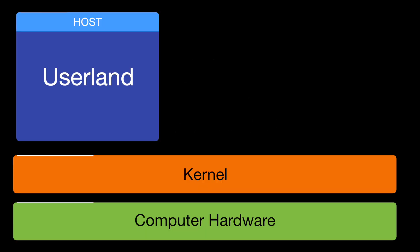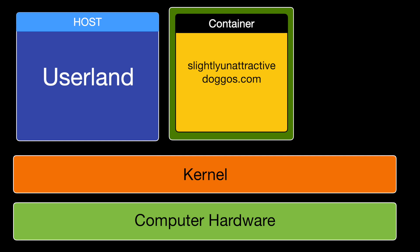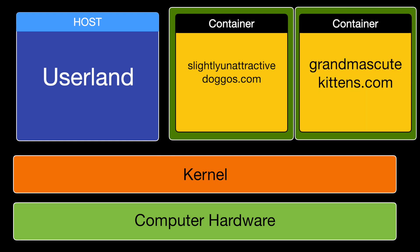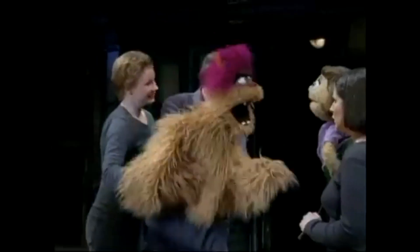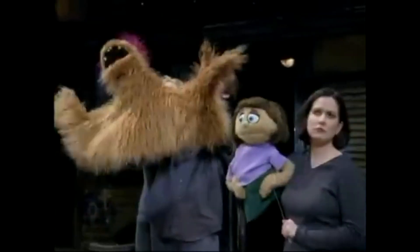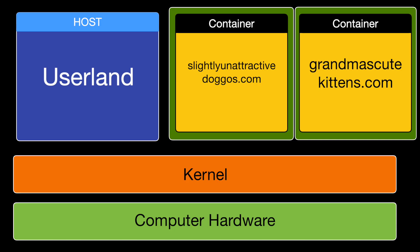Let's go over a hypothetical. Say you launch a container on a server running a website called SlightlyUnattractiveDoggoes.com. People like doggies and you get pretty good web traffic — maybe a hundred visitors a day. Then another person launches a container for GrandmasCuteKittens.com. Almost immediately they get a thousand requests per second, and once successful, they spin up a Discord server and databases for comments — after all, that's why the internet was invented. To your surprise, the performance of SlightlyUnattractiveDoggoes does not degrade. Namespaces are isolating you from the evil kitten empire. Control groups ensure that each container receives its allocated amount of CPU, disk, and network resources — it's like you're running in your own little world.